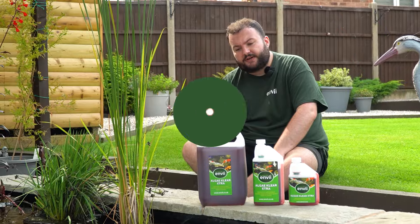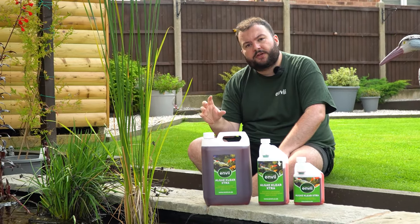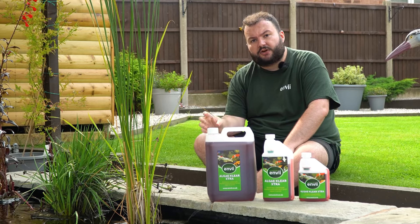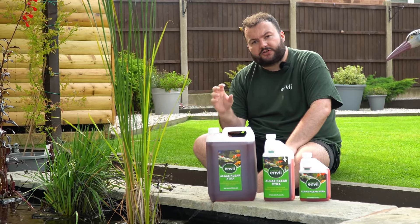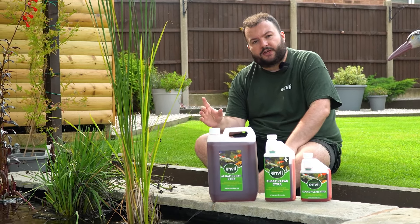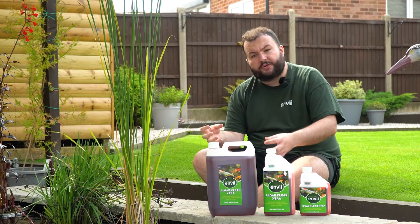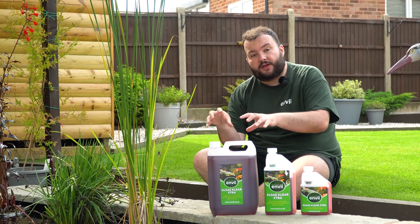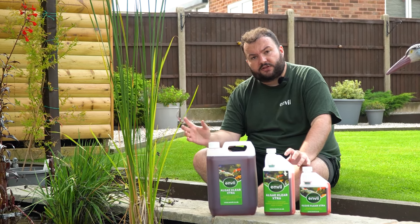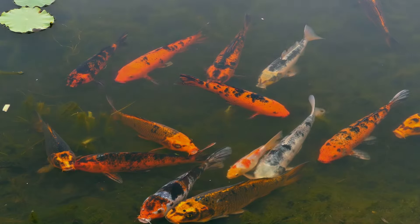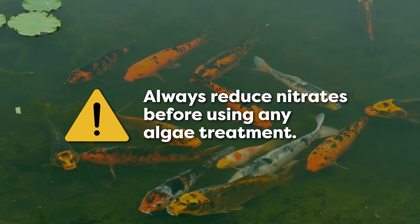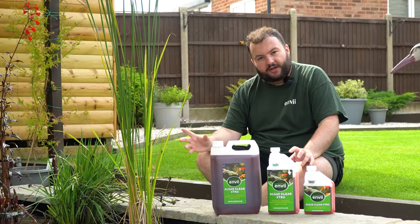Moving on to the next step: treating for algae and blanket weed. Before we do that, it's important to point out that if you have any nitrate readings in the pond whatsoever, get those under control first before moving on to these treatments. Algae and blanket weed can absorb nitrates, so once you kill them, nitrates can be released back into the water, which can become deadly for fish if nitrate levels are already high.